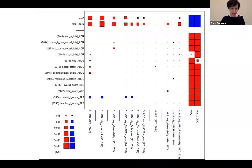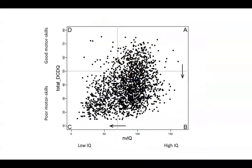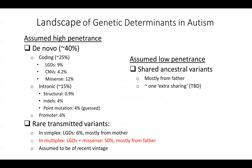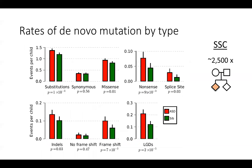LGD stands for Likely Gene Disrupting variants. Here LGD is a combination of nonsense variants — those that introduce a new stop codon — splice site variants, which affect the canonical splice site and with high probability affect the splicing of the gene, and frameshift variants, which are very damaging where the coding frame is changed. These three components — nonsense, splice site, and frameshift variants — we collectively call Likely Gene Disrupting variants.